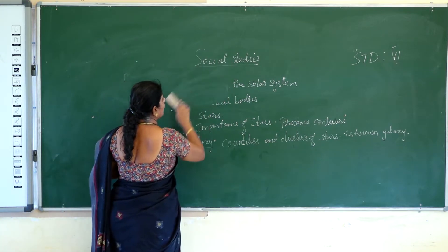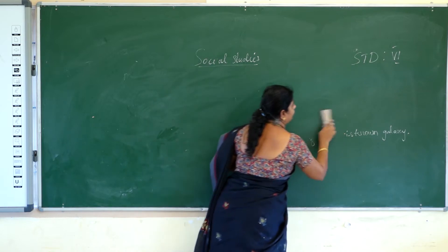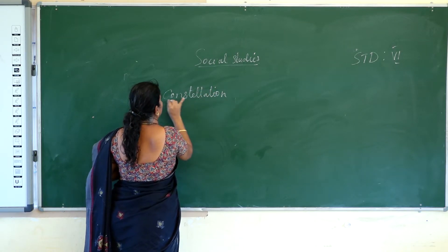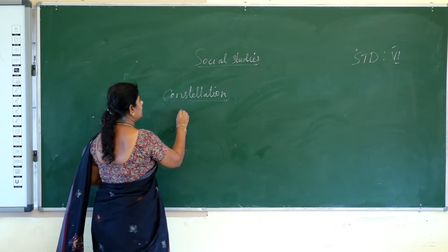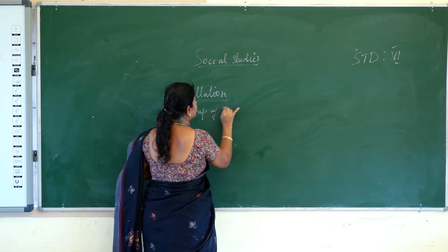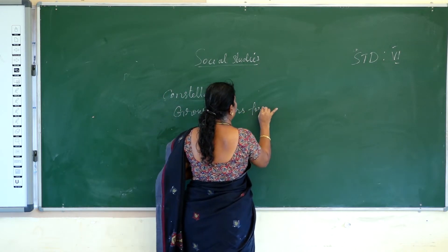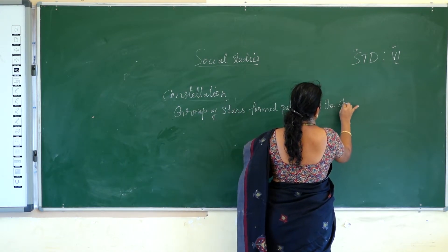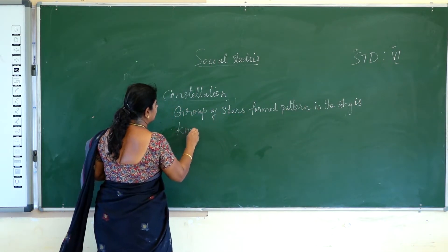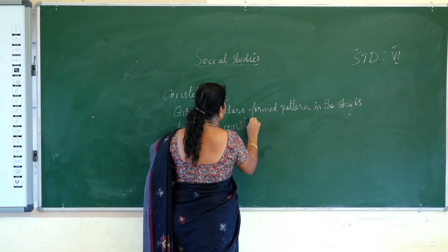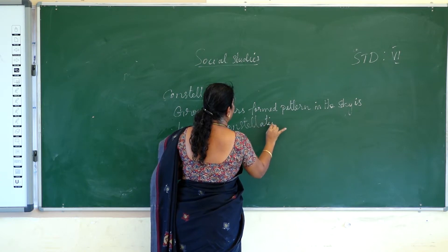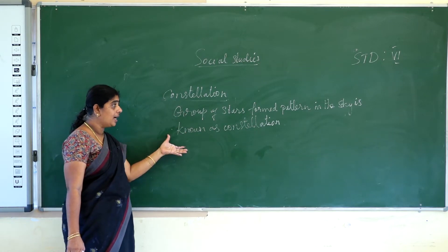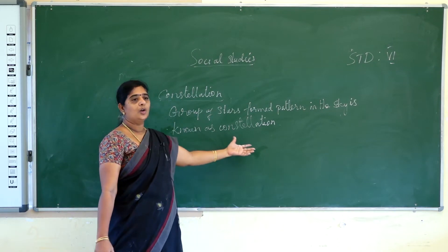Next we are going to see about constellations. What is a constellation? A constellation is nothing but a group of stars that form a pattern in the sky. It is known as a constellation. We have many important constellations.